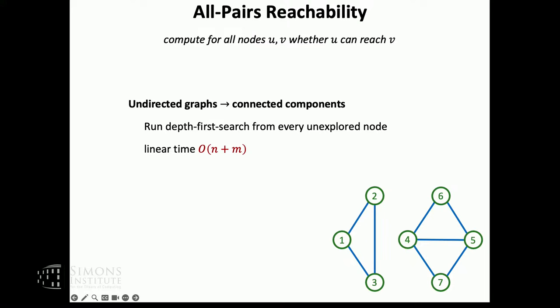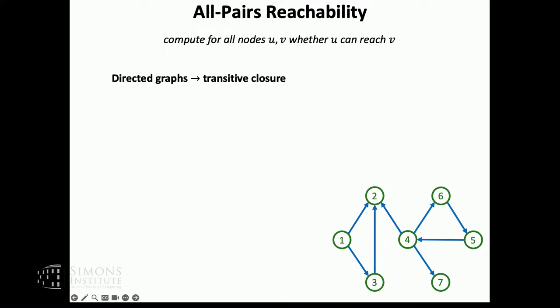On directed graphs, the problem becomes interesting. There we typically talk about computing the transitive closure of a graph. Here is our input graph, and we want to compute all the additional dotted edges — for example, node five can reach node seven via a path, so we want to add this edge to the transitive closure. The bold edges together with the dotted edges would be the output.